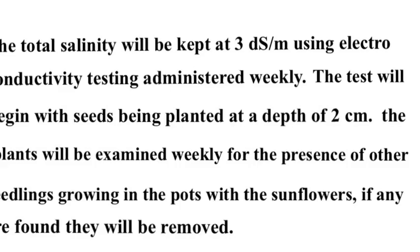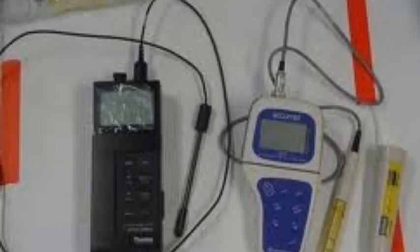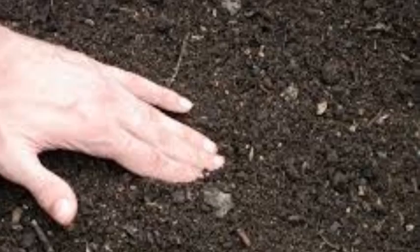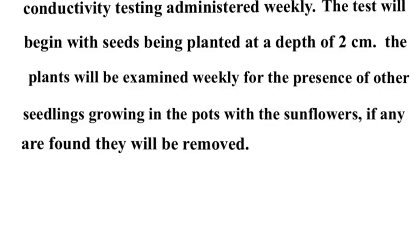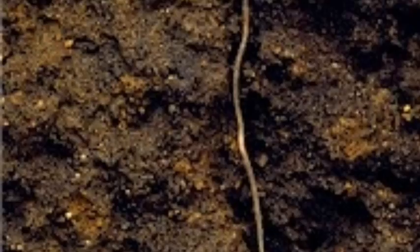I'm going to keep the humidity in the room the same with an automatic humidifier. I'm going to test the amount of salt in the soil with an electroconductor meter. I'm going to plant the seeds at the same depth — two centimeters deep — so that they're all the same. And I'm going to check every week to make sure no weeds have sprouted up that might compete with my sunflower, and pull those weeds as they come up.